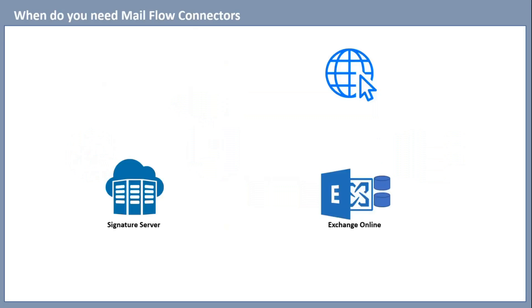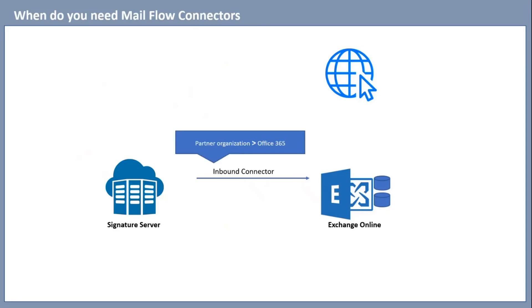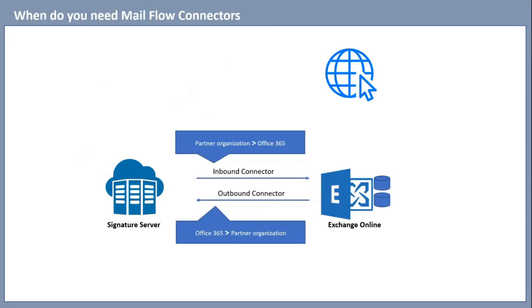The next scenario is if all mailboxes are hosted in Exchange Online and you want to use a signature service to add automatic signatures on all incoming and outgoing emails. In this scenario, you need two Mailflow Connectors: one inbound connector from partner organization to Office 365, and one outbound connector from Office 365 to partner organization. The outbound connector routes emails to the signature server, which adds signatures, and the inbound connector routes those emails back to Office 365, from where they are delivered to the internet.